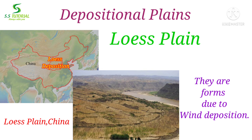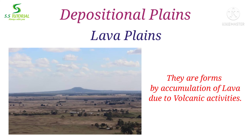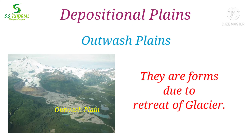When loess deposits into low land by winds and forms a plain, it is called a loess plain. Loess plains can be found in the Huanghe River Basin. When plains are formed by accumulation of lava due to volcanic activities, they are called lava plains. When a glacier retreats, sands, mud, silts, and sediments that were being carried by the glacier are deposited and form a plain land, which is then called an outwash plain.